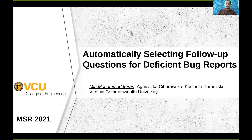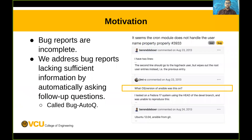Hello everyone. Today I will present our paper, Automatically Selecting Follow-up Questions for Deficient Bug Reports. My name is Mia Muhammad Imran, and two of my collaborators are Agnieszka Sivriska and Dr. Kostadin Damanski. We are all researchers at Virginia Commonwealth University.